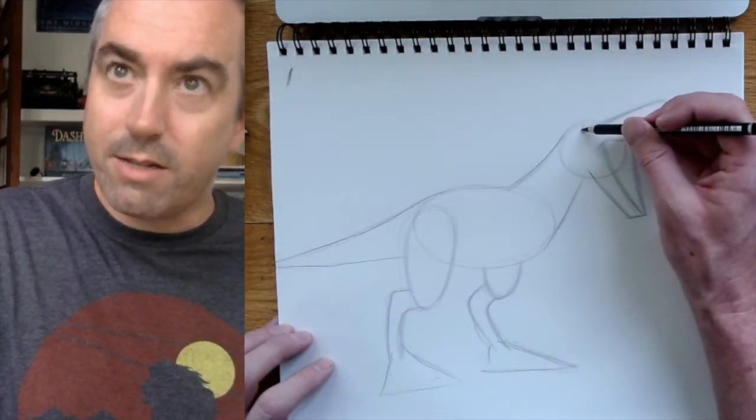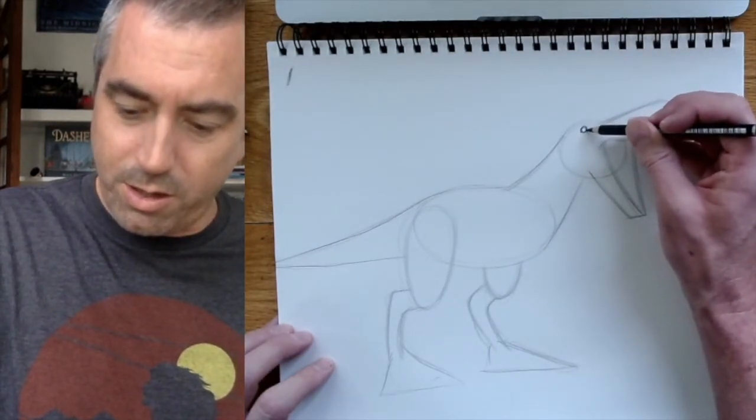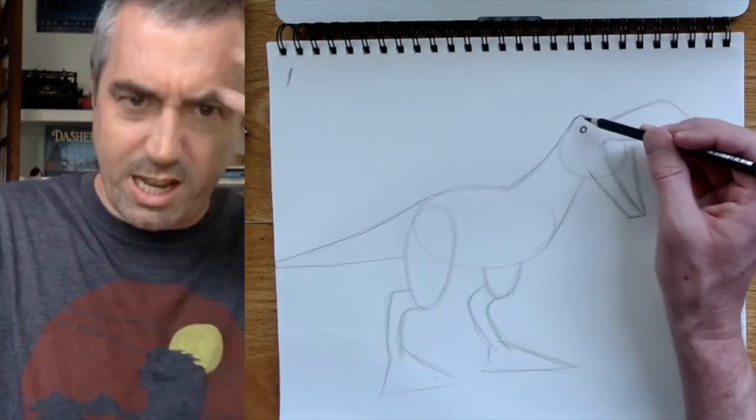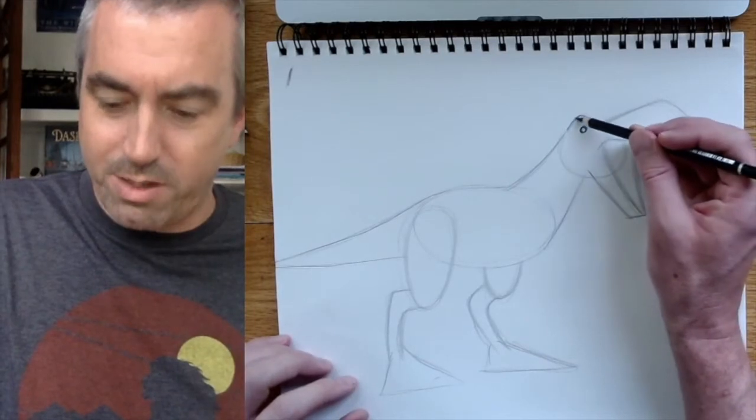Now the eye goes right around here somewhere. So we'll make this little circle. Looks like the head kind of juts out sort of like where his eyebrow would be, kind of goes up like that.